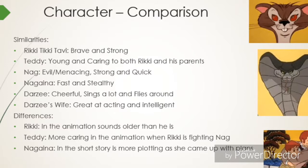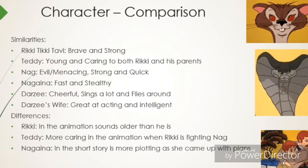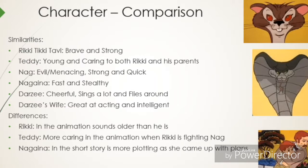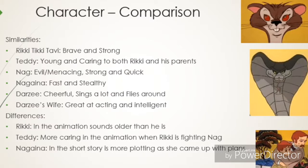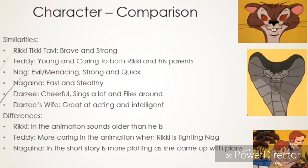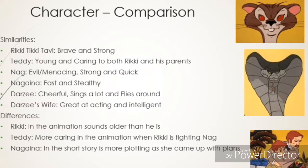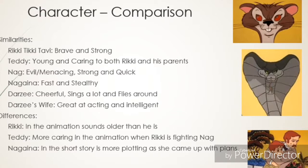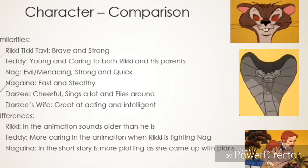Darzee is very cheerful and loves to sing. He likes to fly around a lot, as he is a tailorbird, and he is very worried about his eggs that were stolen. Darzee's wife is very different from Darzee himself. She played a big role in both versions and is very good at acting and intelligent when it comes to tricking others, as she led Nagaina into a trap. The animation was more successful, as it captures the characters' traits more, and it is also easier to understand what they are doing and how they are doing it. It also shows us what they sound like and look like.